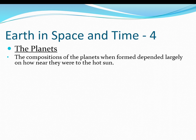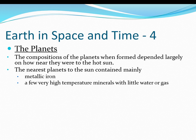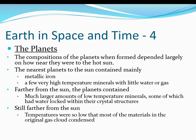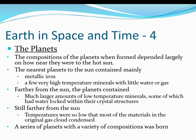What the composition of each planet is depends largely on how near or far from the Sun the planet is. The inner planets closer to the Sun are considered rocky planets and consist of metallic iron and a few very high temperature minerals, with little water or gas. Farther from the Sun, the planets have more low-temperature minerals present, some of which actually have water in their crystal structures. Still farther from the Sun, temperatures are so low that most of the material in the gas cloud condensed. So due to their proximity to or distance from the Sun, we have a series of planets with different compositions.